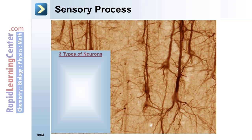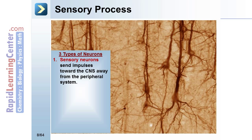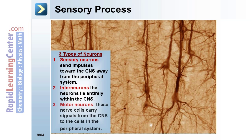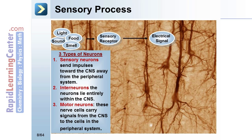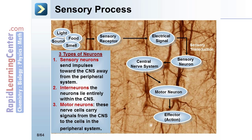Sensory processes: there are three types of neurons. First, sensory neurons send impulses toward the CNS, away from the peripheral system. Second, interneurons lie entirely within the CNS. Third, motor neurons carry nerve signal impulses from the CNS to the cells in the peripheral system.